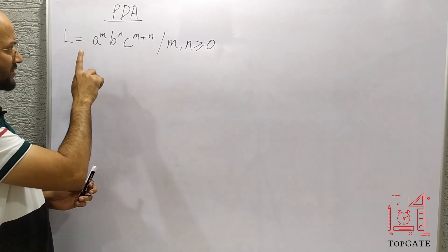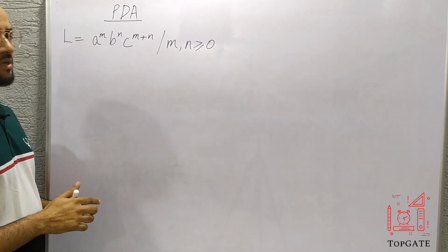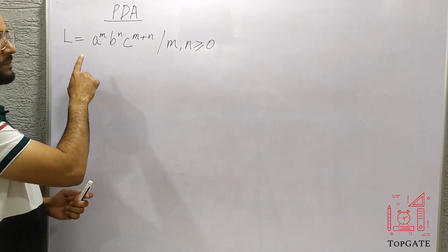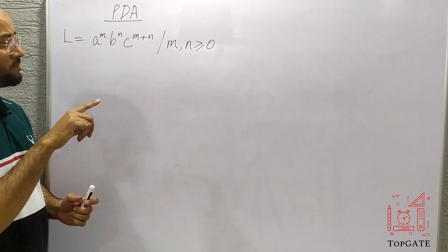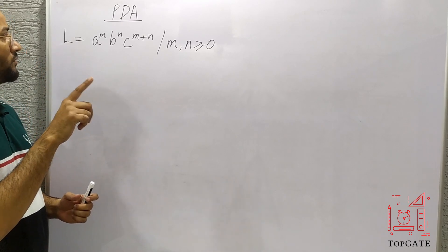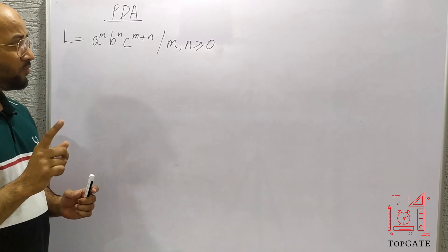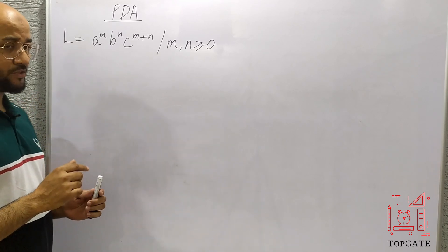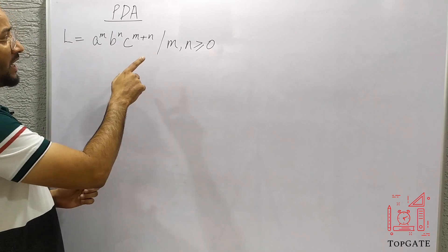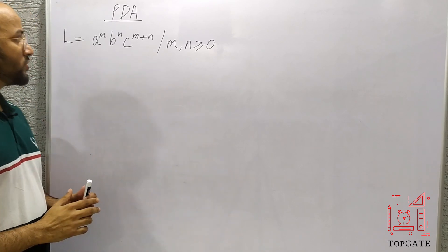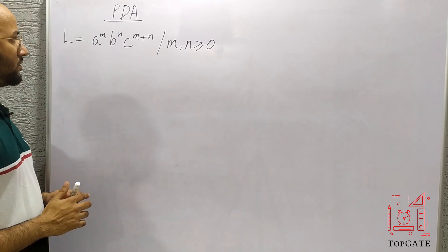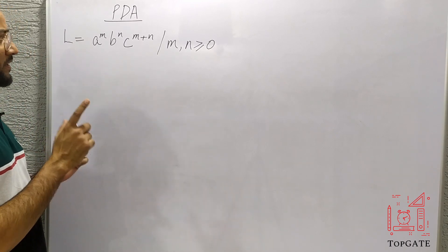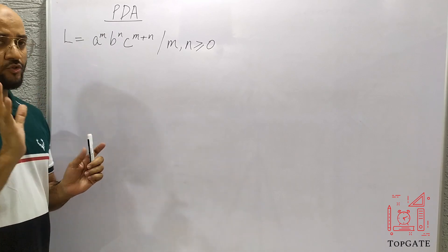We did a similar kind of question previously in the previous videos — that was: design a PDA for L equal to a to the power m plus n, b to the power m, c to the power n, but the value of m and n was greater than zero in that case. Here we have zero also included. So first we will see what kind of strings are possible in this language, and then I will design a PDA for all those strings.